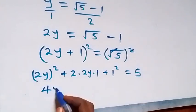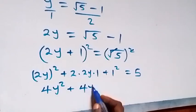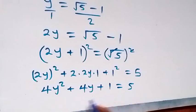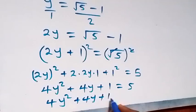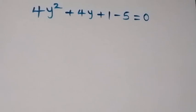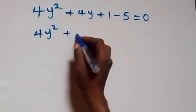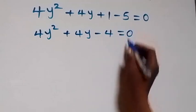The square affects both 2 and y, so we have 4y² + 4y + 1 = 5. Taking 5 to the left side, we have 4y² + 4y + 1 - 5 = 0, which becomes 4y² + 4y - 4 = 0.